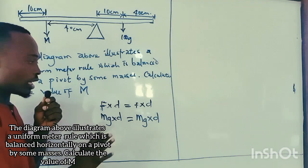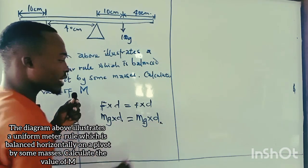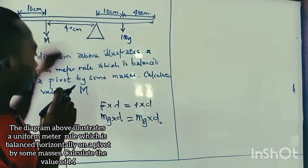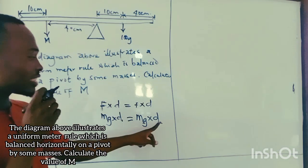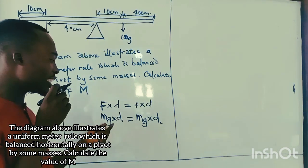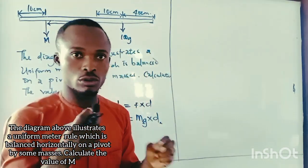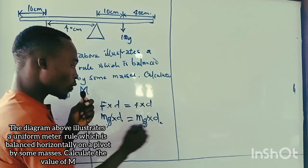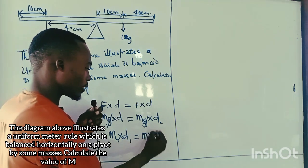M1 is the mass on one side and D1 is the distance it makes to the pivot, while M2 is the mass on the other side and D2 is its distance to the pivot. The gravity G is constant at 10 m/s², so it appears on both sides and cancels out. What we have left is: mass of the first object times its distance equals mass of the second object times its distance.